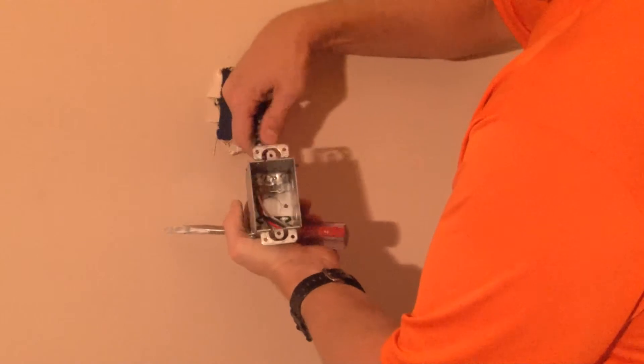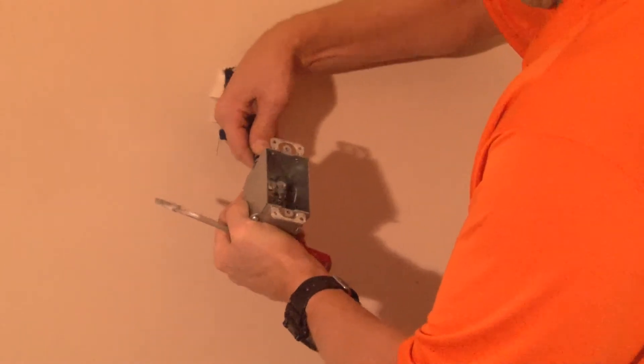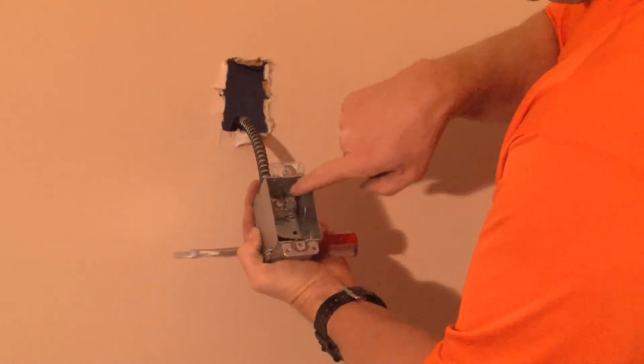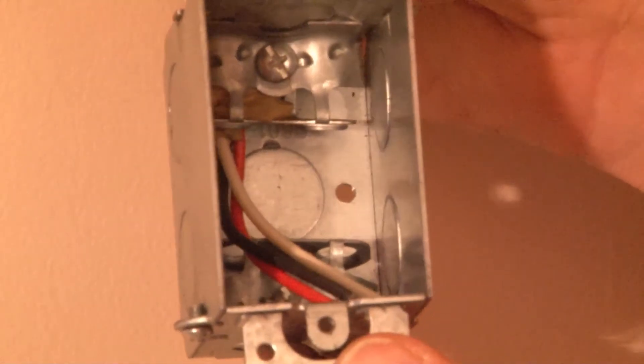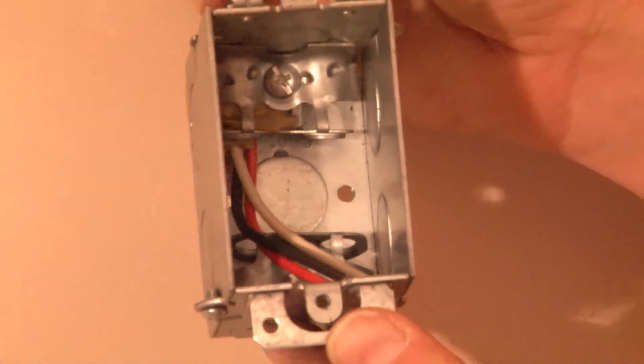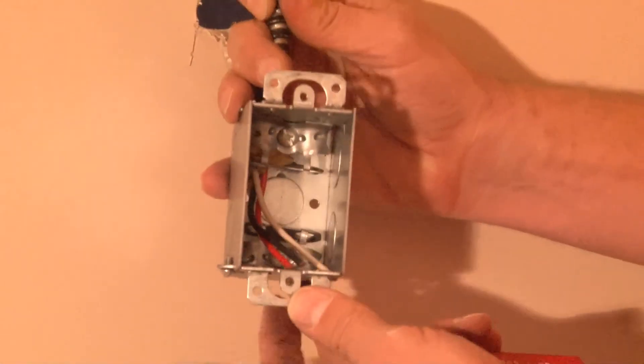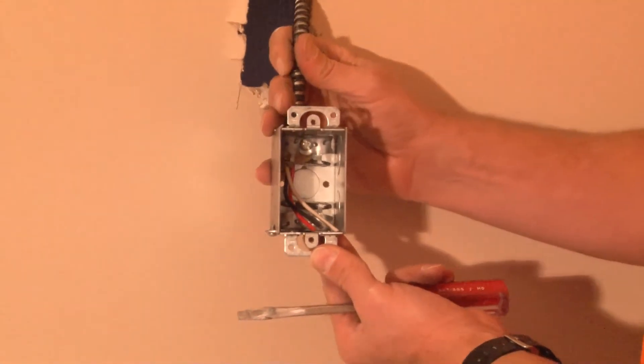You slide the flex conduit and tighten the set screw in the bottom. At this point, by tightening the set screw, it clamps on the outer sheathing of the metal and allows the electrical conductors to be free inside the box.